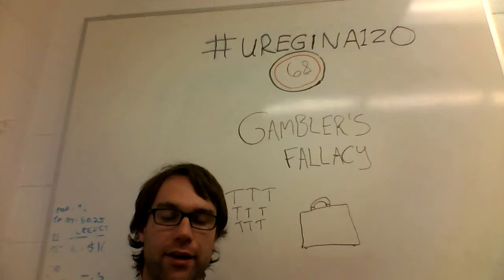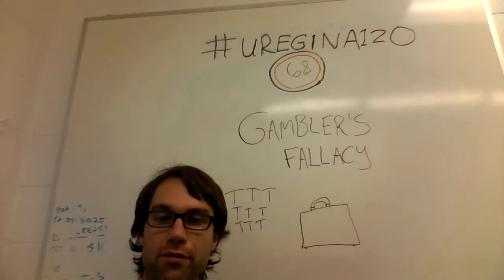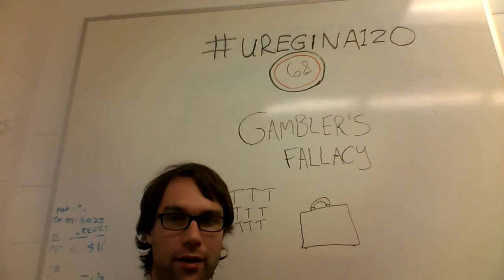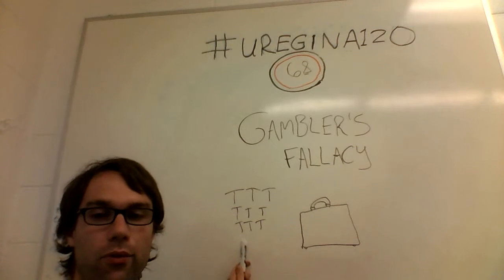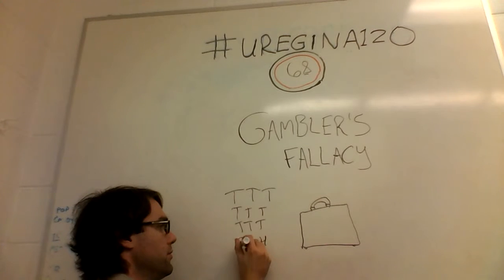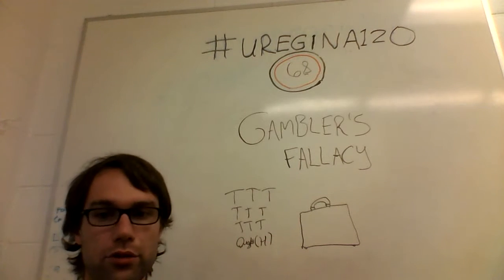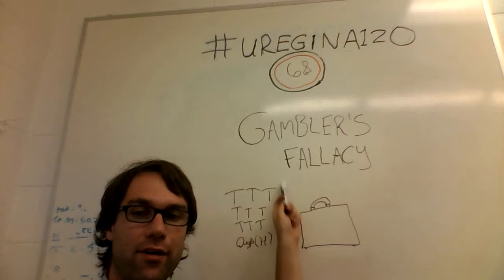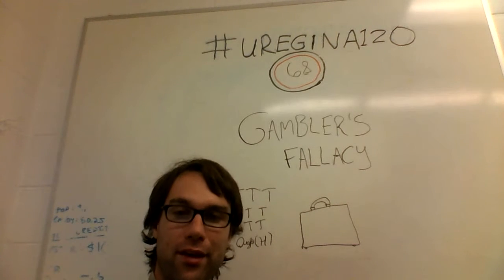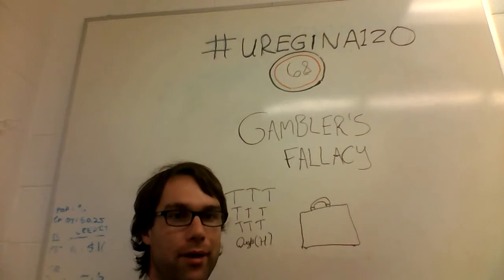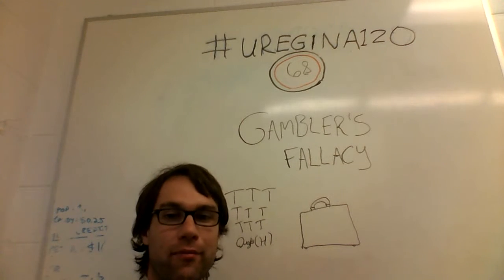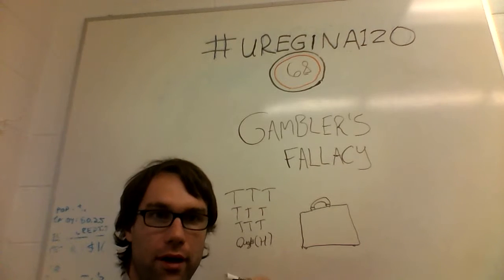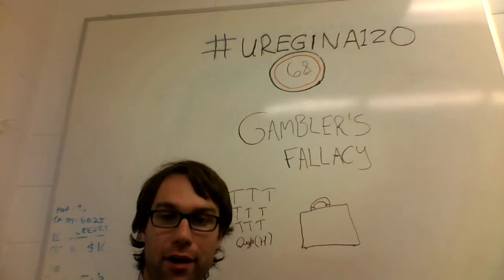As with other fallacies, this is related to other logical fallacies we have already done videos on. The first is the is-ought fallacy, where we are assuming that the next flip ought to be heads, when in fact there is no valid step from 'is nine tails' to 'ought heads.' It is also related to the post hoc ergo propter hoc video, in that we are concluding that something, just because it follows something else, can be caused by that something else.